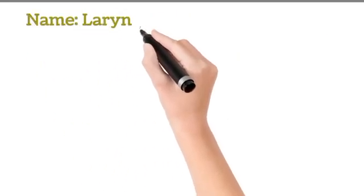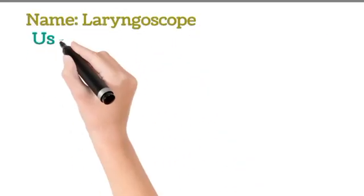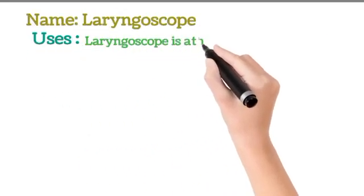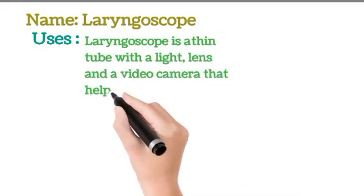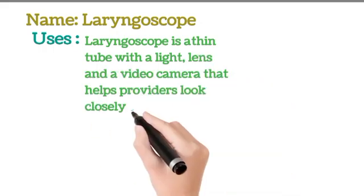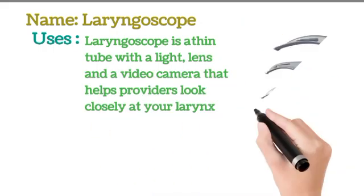Name: Laryngoscope. Uses: A laryngoscope is a thin tube with a light, lens, and video camera that helps providers look closely at your larynx.